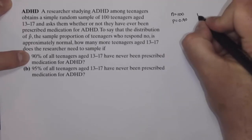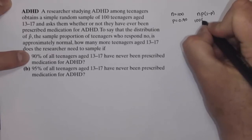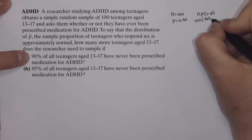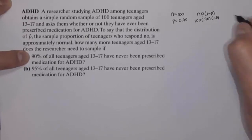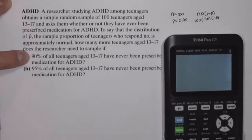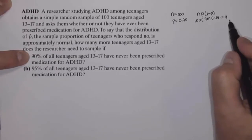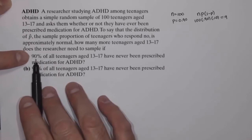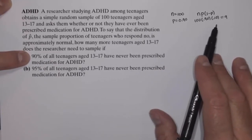Well, if that's the case, then n times p times (1 minus p) would equal 100 times 0.90 times 0.10. If we do that calculation, 100 times 0.90 times 0.10 is 9. So that is not 10 or bigger, which means if p equals 0.90, I don't have a large enough sample to say that the p-hat distribution would be normal.